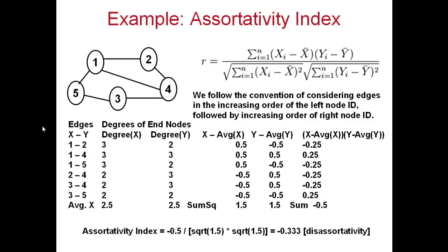Now consider the first set of vertices: these form part of the set X. The second set of vertices form part of the set Y. Each edge has two vertices — the first end vertex you write is considered part of set X, and the second end vertex is considered part of set Y. Now write down the degrees of the end vertices in set X and the degrees of the end vertices in set Y.